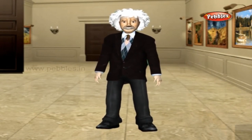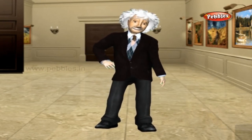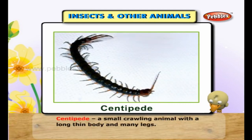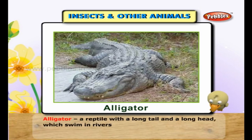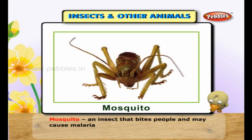Let's learn about insects and other animals. An arthropod is an animal of a large class having six legs or more. An amphibian is an animal that spends part of its life in water and part on land, such as a frog. A centipede is a small crawling animal with a long thin body and many legs. An alligator is a reptile with a long tail and a long head which swims in rivers. Cold-blooded describes animals such as reptiles whose body temperature changes according to their surroundings. A mosquito is an insect that bites people and may cause malaria.